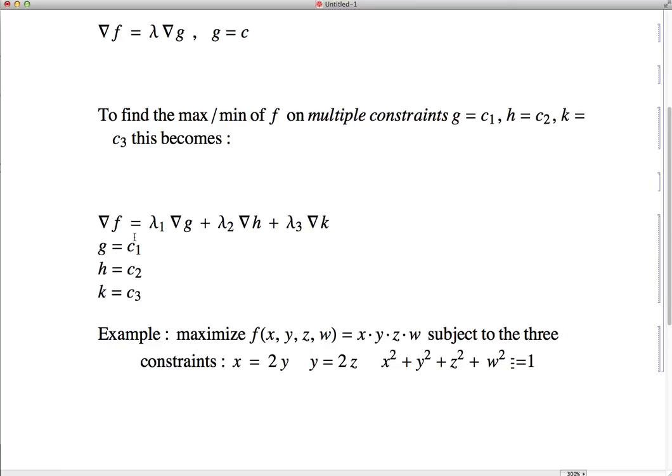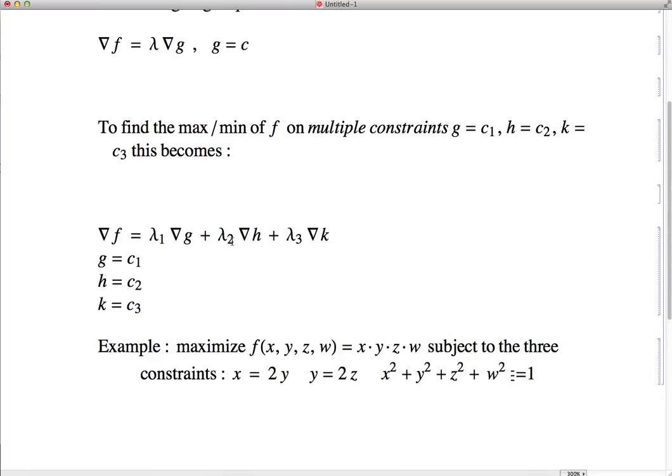Then the only difference is we have to incorporate all three of these constraints. And the way we do that is by, this is called a linear combination, but basically this is the new Lagrange equation. Grad f equals some multiplier times the gradient of g, plus some other multiplier times the gradient of h, plus a third multiplier times the gradient of k.